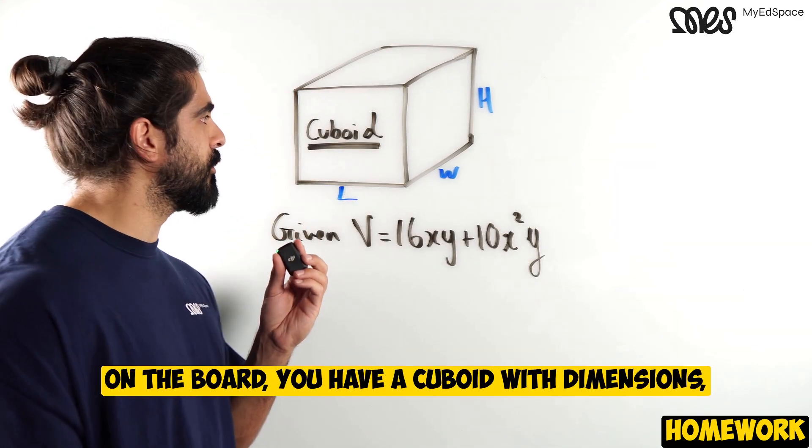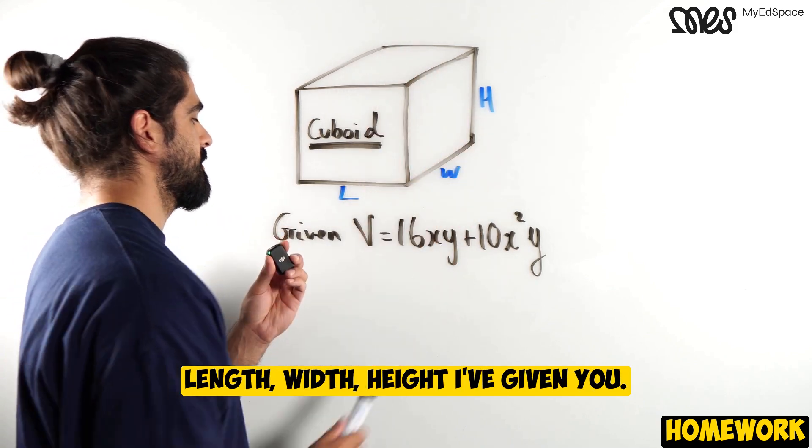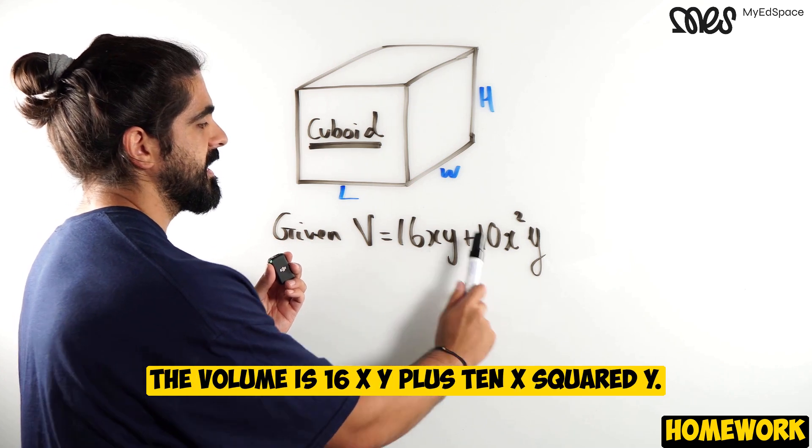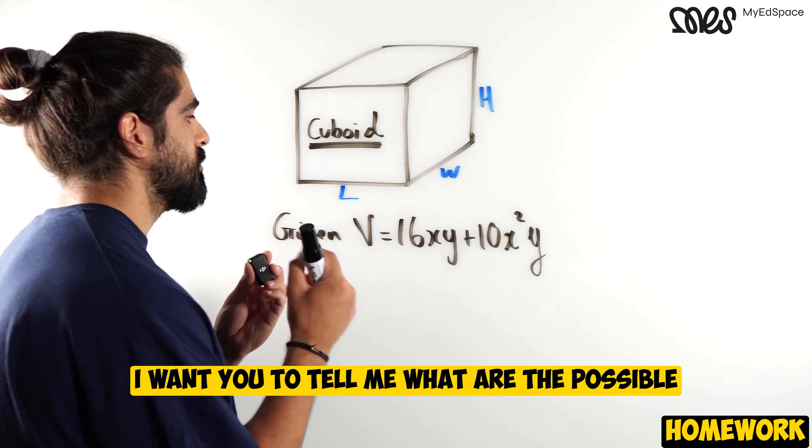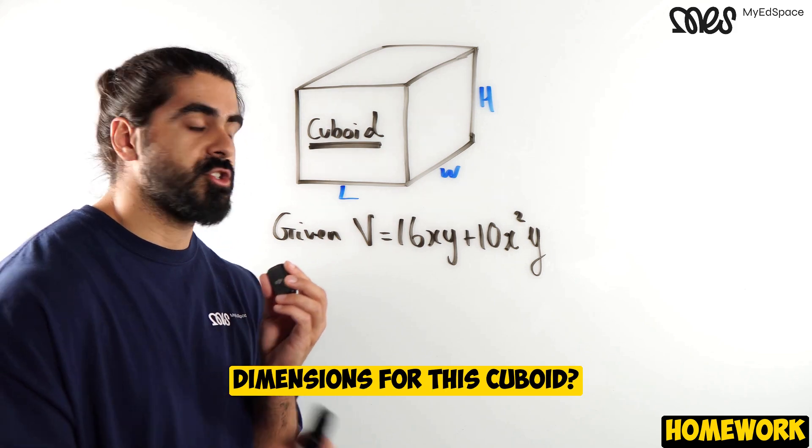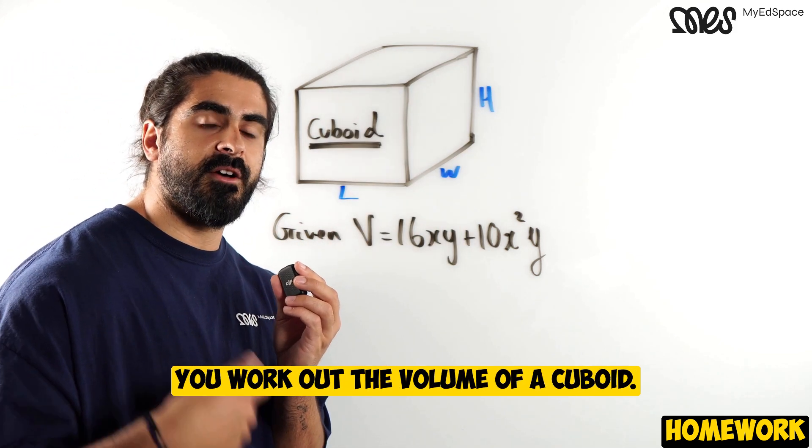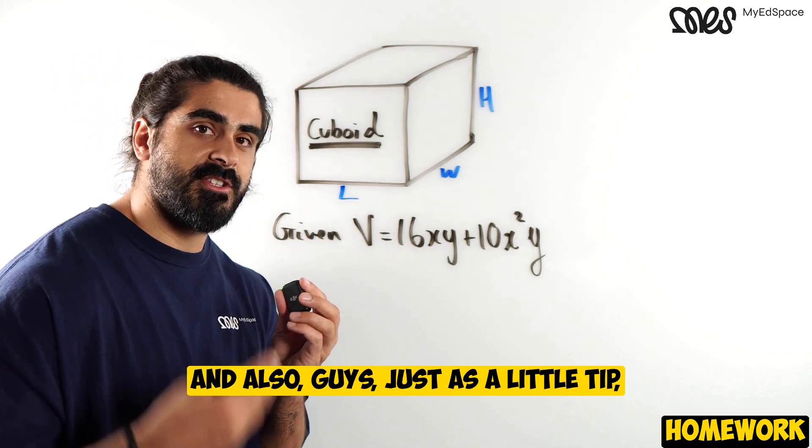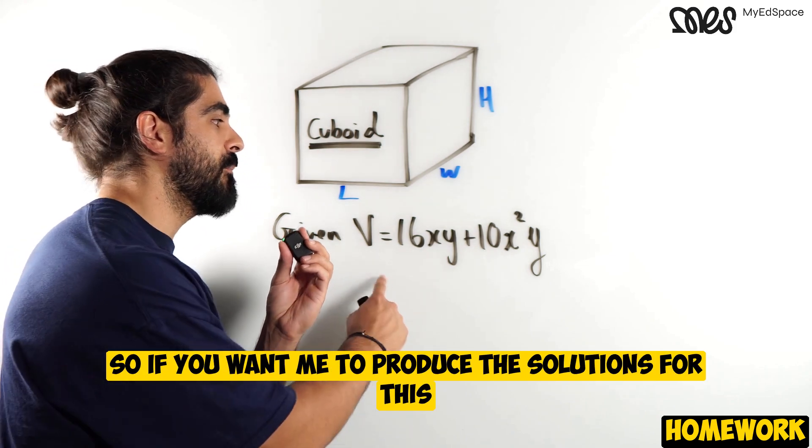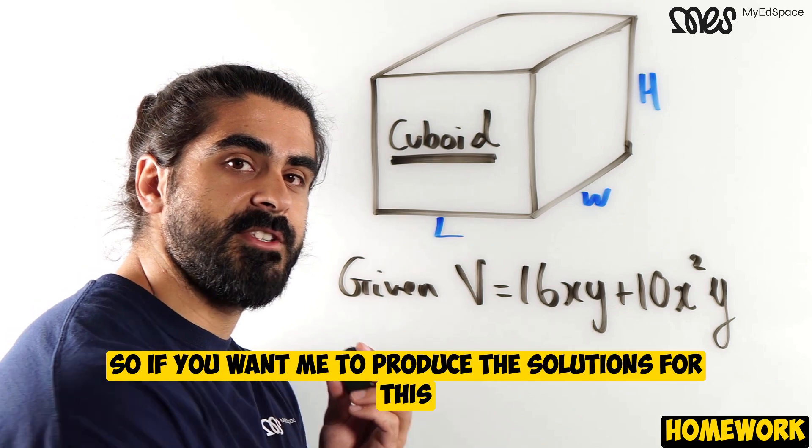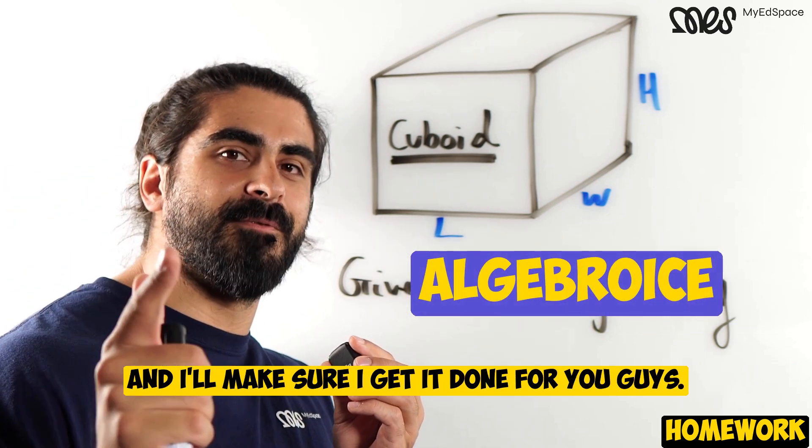It's homework time. On the board, you have a cuboid with dimensions length, width, height. I've given you the volume is 16xy plus 10x squared y. I want you to tell me what are the possible dimensions for this cuboid. So you have to think about how do you work out the volume of a cuboid. And also guys, just as a little tip, it has to do with what we were just talking about. So if you want me to produce the solutions for this, in the comments, I want you to comment algebraice. And I'll make sure I get it done for you guys.